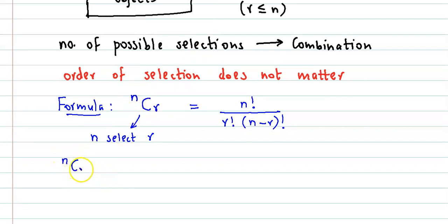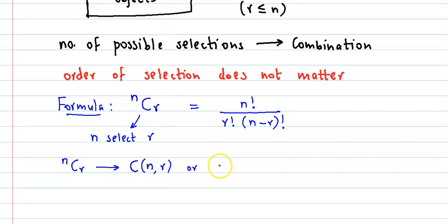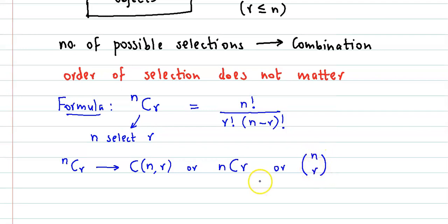nCr के दूसरे भी notations हैं। nCr को हम C(n, r) के रूप में लिख सकते हैं, या n, C, r एक ही line में, या फिर एक special bracket notation में n ऊपर और r नीचे। So all these are different notations for combination. And इसको read करते हैं 'n select r' या 'n choose r'.